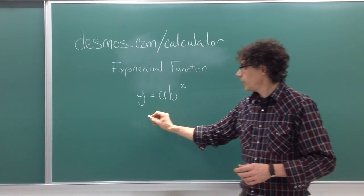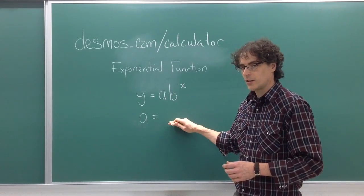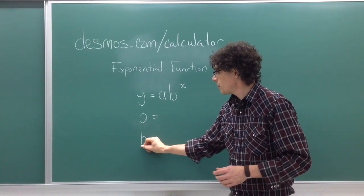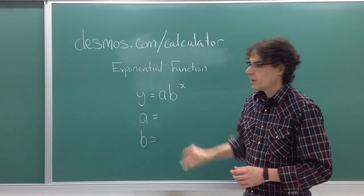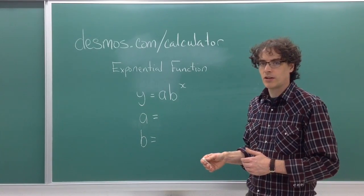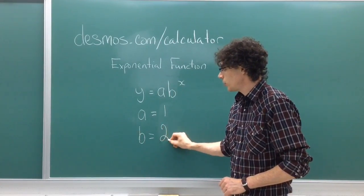I also want you to enter a equals in a cell below the formula, and then another one b equals. And it should ask you to set up a slider when it does this. I want you to set a equal to 1 and b equal to 2.